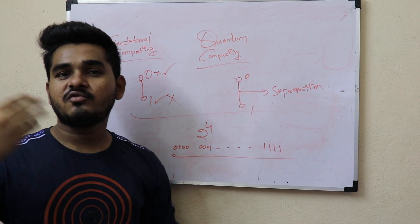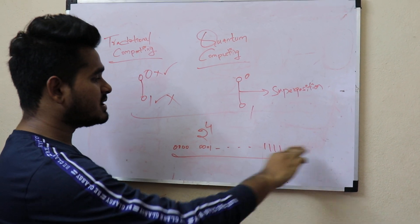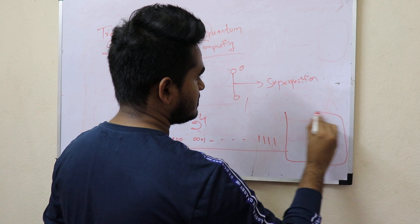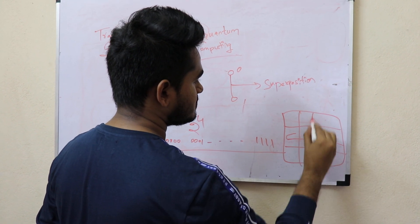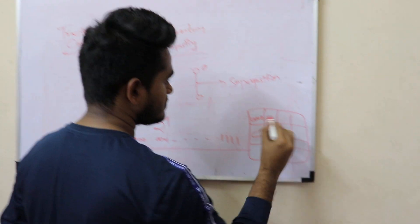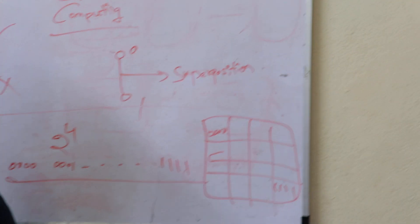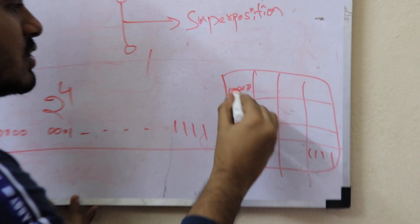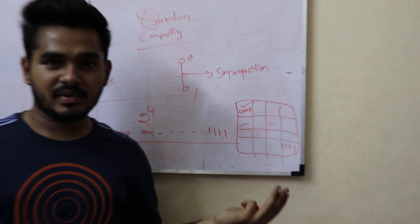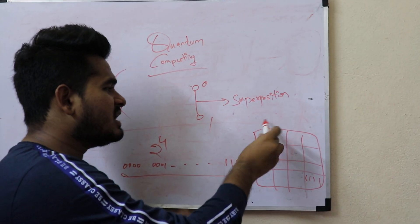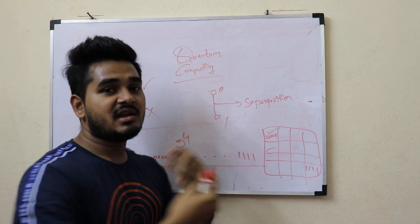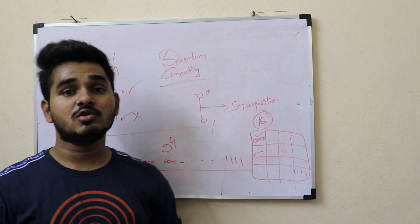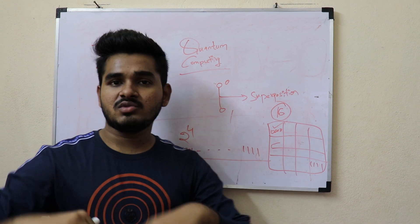These are the 16 combinations when dealing with four different processes. If I ask you to guess which one I picked from these 16 placed in a table, you would randomly pick one, and if it fails you pick another. There are 16 possibilities, so you may need up to 16 attempts to get the correct one.